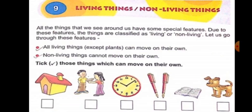All the things that we see around us have some special features. Everything in our surroundings has special features — some characteristics. Due to these features, things are classified as living things and non-living things.